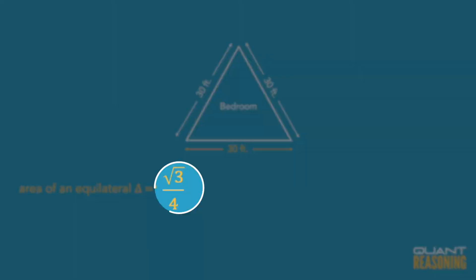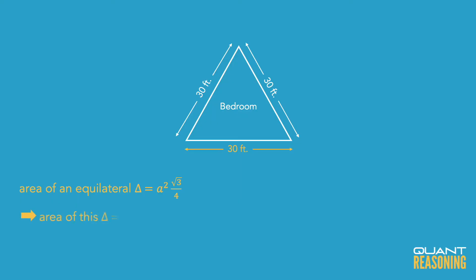So if we call the side of an equilateral triangle a, we could just memorize a² √3 / 4. Right? a² √3 / 4. Plugging 30 into a, we get 30² times √3 over 4.